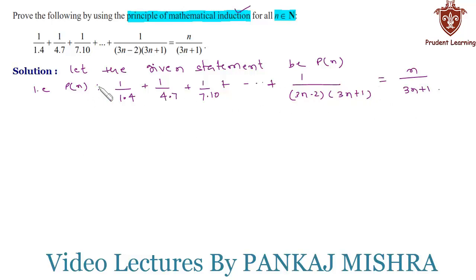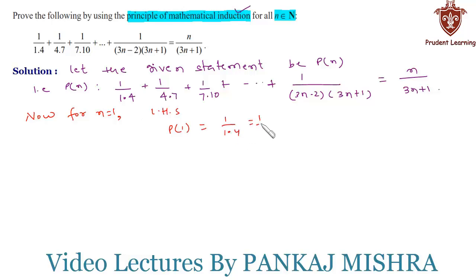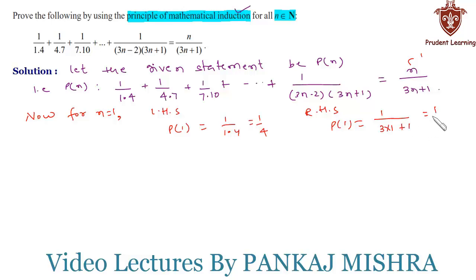In our first step we'll verify that the given equation is true for n=1. For n=1, the left-hand side gives P(1) = 1/(1×4) = 1/4. On the right-hand side, substituting n=1 into n/(3n+1) gives 1/(3+1) = 1/4. Since both sides are equal, the given equation is true for n=1, so P(1) is true.